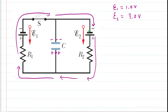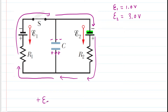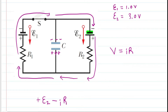We begin at the negative terminal of battery E2 and move clockwise around the loop. Moving from the negative to the positive terminal of E2 is an increase in potential: +E2. Moving through resistor R2 gives a potential drop: −I·R2. Continuing clockwise, we encounter R1, giving another drop: −I·R1. Then we reach battery 1, where we go from positive to negative — another drop: −E1. Returning to the negative terminal, Kirchhoff's loop rule sets the total potential change equal to zero.